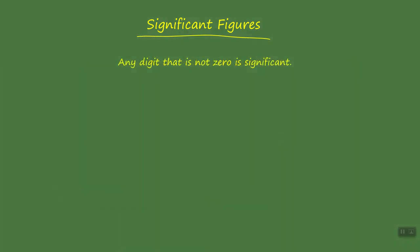Let's take a look at our first guideline: any digit that is not zero is significant. Our first example is the number 1964. Every digit is a non-zero. We have four digits, they're all significant, so we have four significant figures.